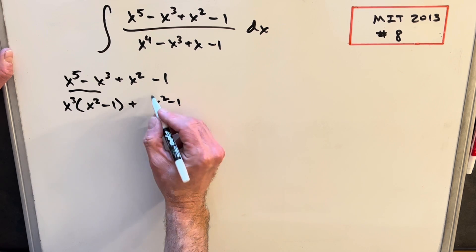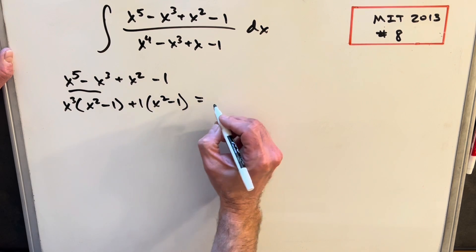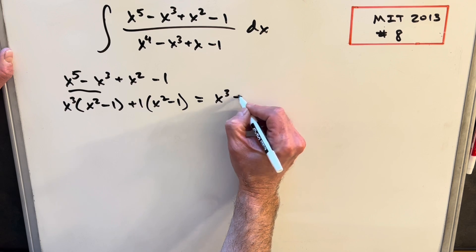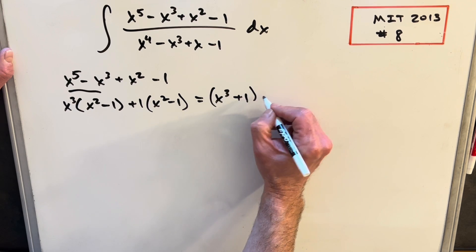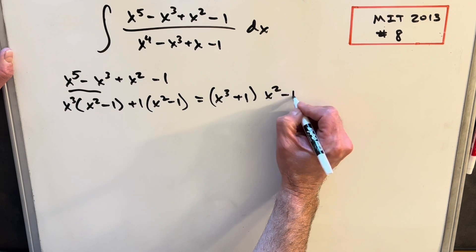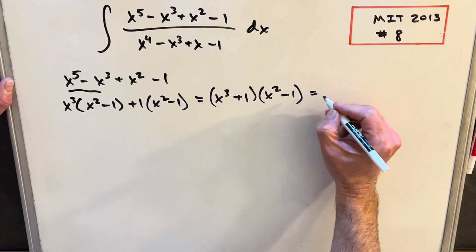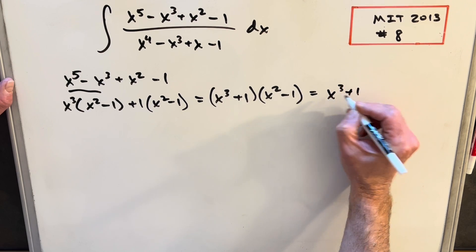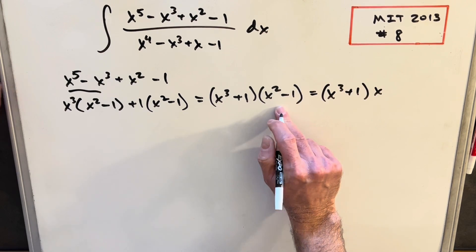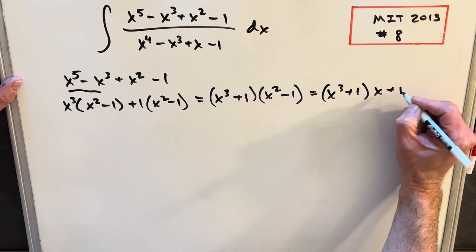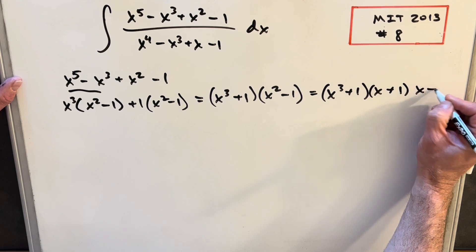We'll notice we have this term in common, we can just look at this as a 1 right here. Then we can write this as (x^3 + 1) times (x^2 - 1). To factor it a little more, this is the difference of squares, we can write this as (x^3 + 1)(x + 1)(x - 1).